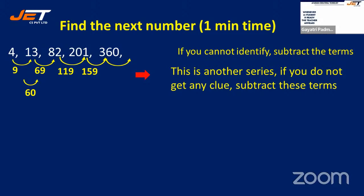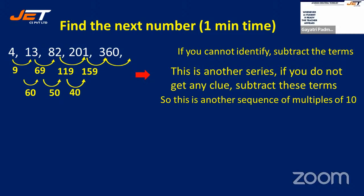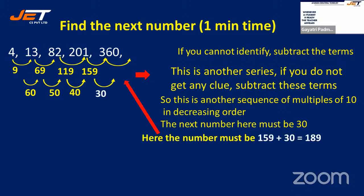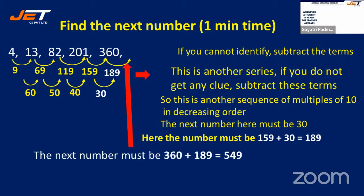The second differences decrease: 60, 50, 40. So the next must be 30. Therefore, 159+30=189, and 360+189=549 is the next number in the sequence.